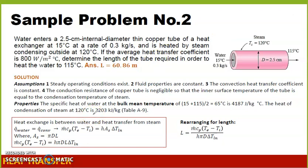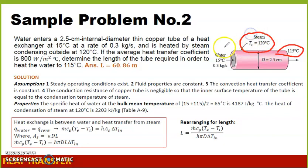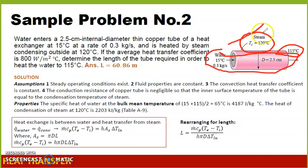Now we need to find the length of the tube required so that the exit temperature of 115 degrees Celsius is achieved. The heat coming from the steam causes the water temperature to rise. So the energy balance gives us: ṁ·CP·ΔT equals the heat convected, which is H·A_s·ΔT_LN, the logarithmic mean temperature difference.